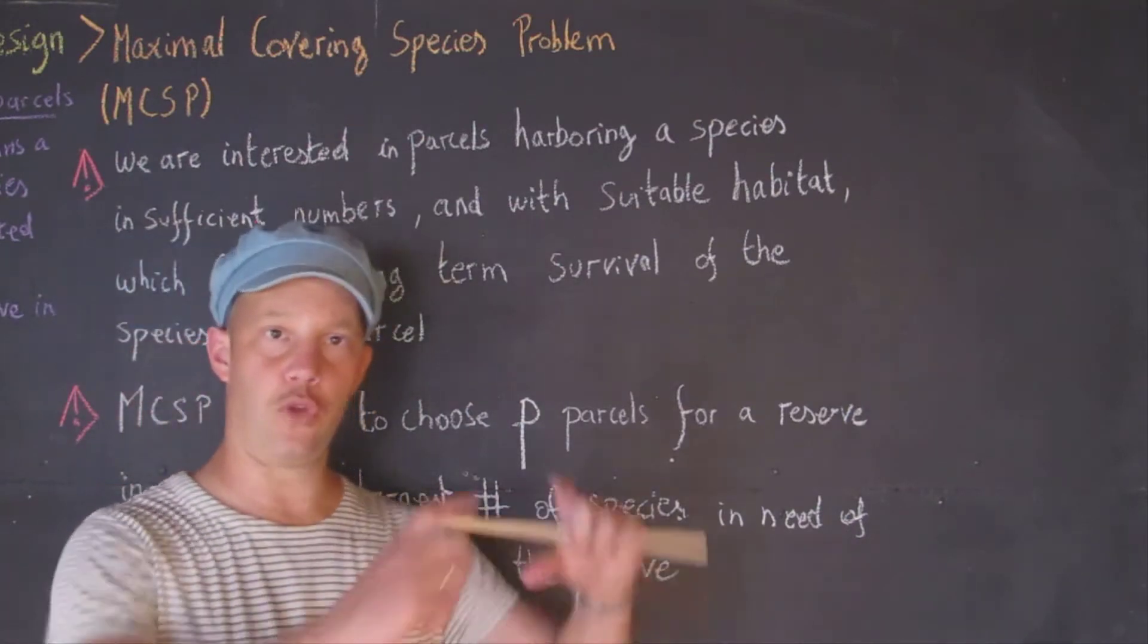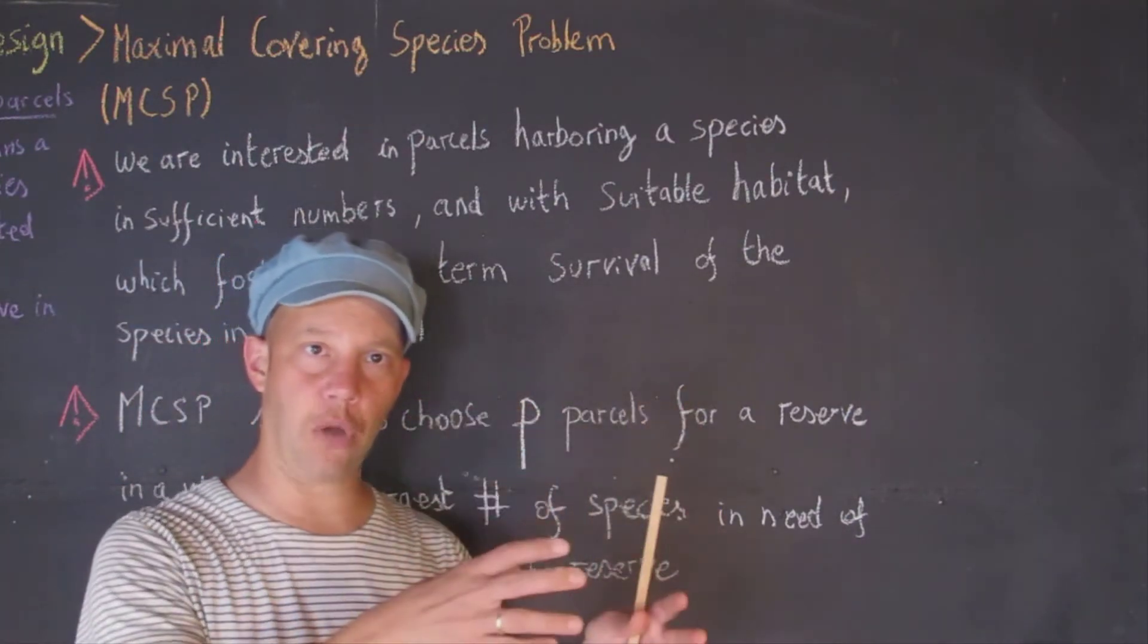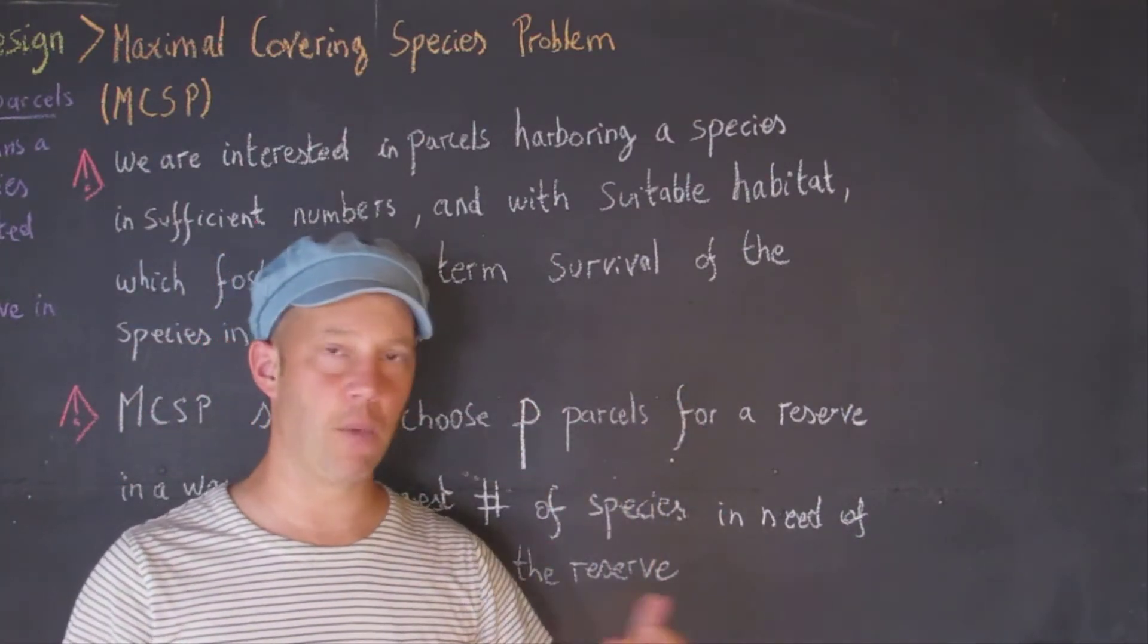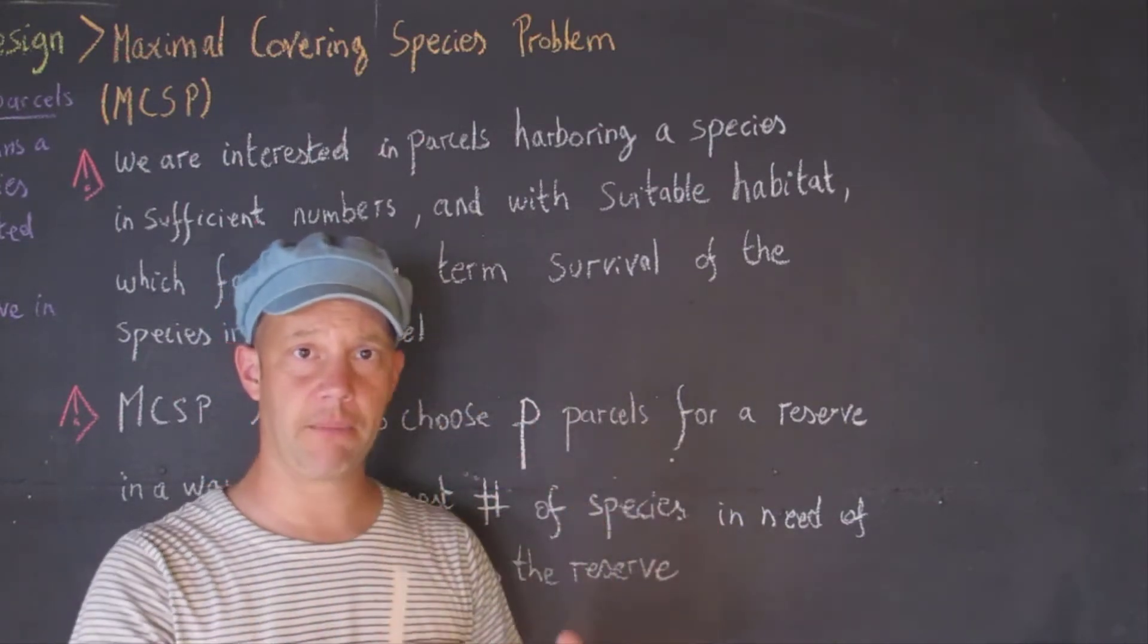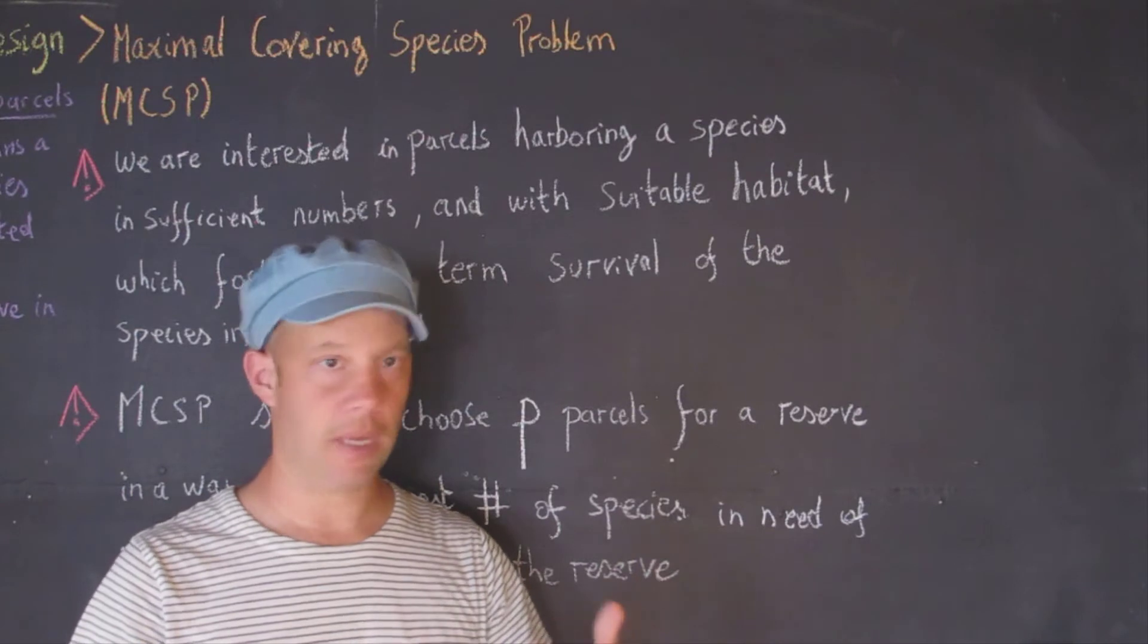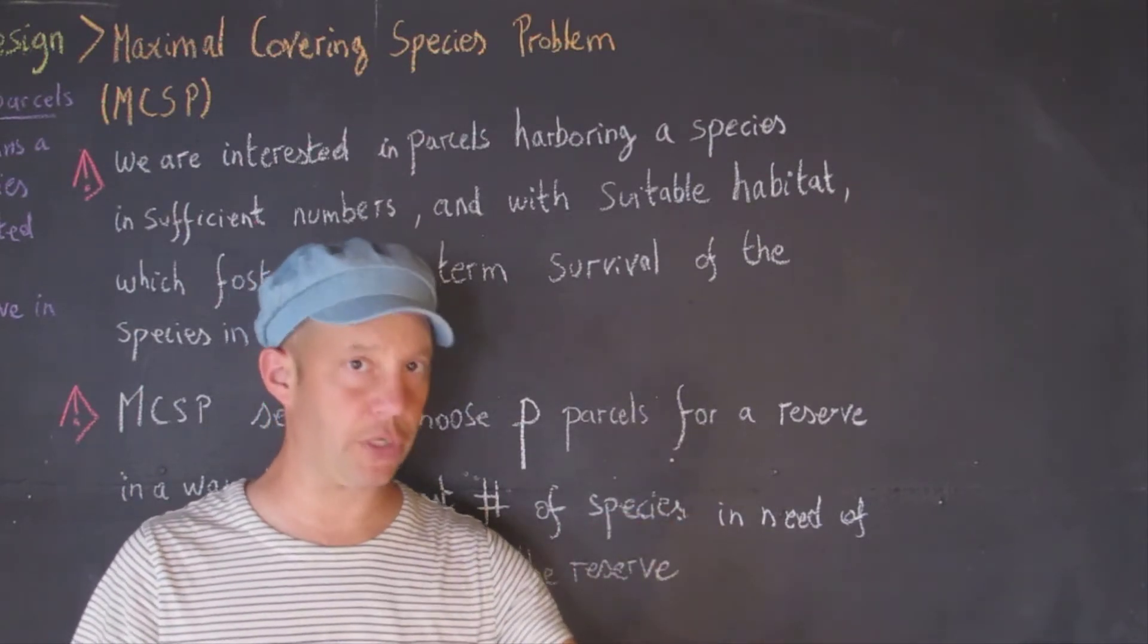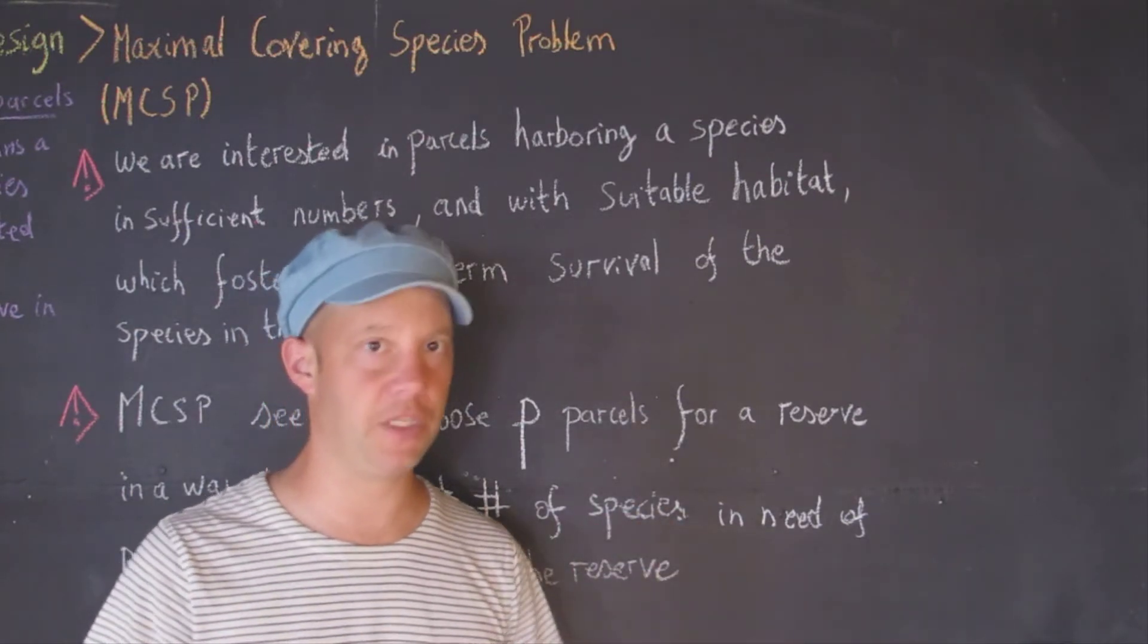I will take a simple example. You may have a parcel that is maybe surrounded by highways, or you can have the exact same parcel that is surrounded maybe by a forest. Well, I would think that the second option is probably better for the survival of the species.